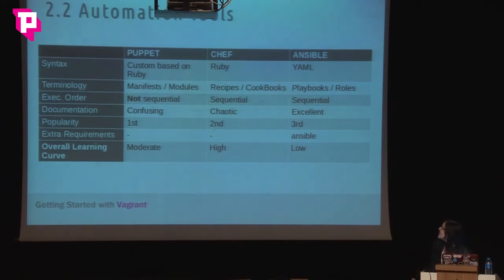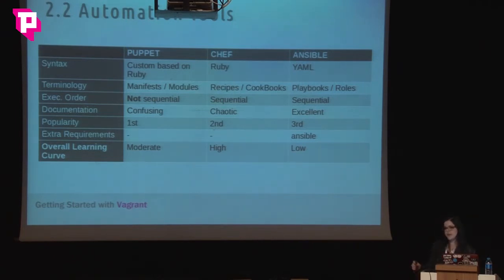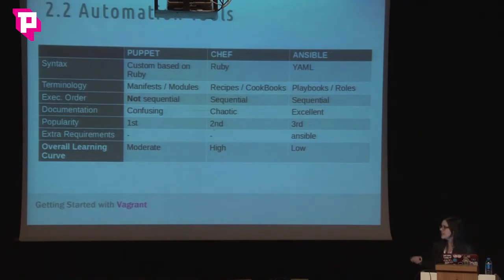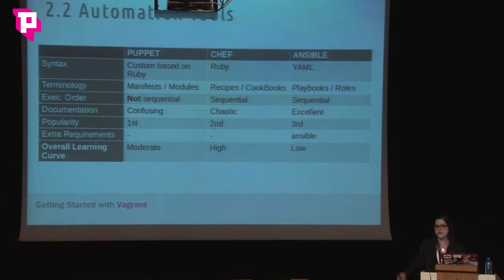Ansible is the third most used provisioner. It's still kind of new and still changing a lot with new features, but it's very, very straightforward. The scripts are written in YAML — very simple and human readable. The scripts are called playbooks and they can be organized into roles, which is the equivalent of modules in Puppet and cookbooks in Chef. The documentation is very clear and the overall learning curve is very low. The only thing is that you need to install Ansible on your host machine — with the other two you just need Vagrant and VirtualBox.